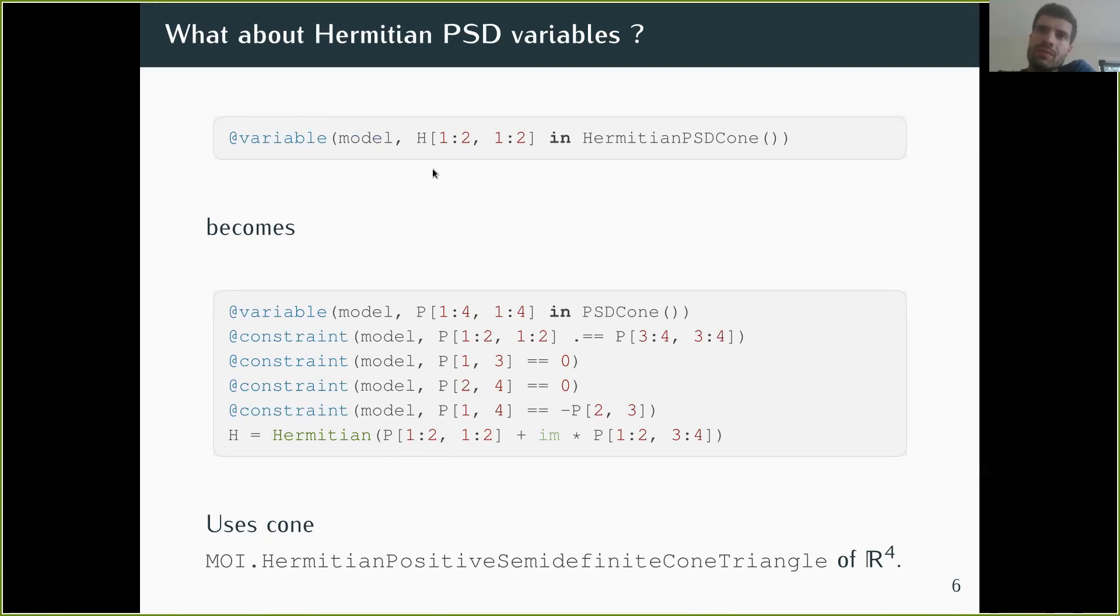The H matrix that the user created would be this. We could do the reformulation directly in Jump, but the disadvantage is that if the solver actually supports the Hermitian PSD cone, it would still receive a big PSD constraint four-by-four. By creating a set at the solver interface, we allow solvers that support this set to directly receive a constraint with four variables in this cone, and the reformulation is done only if necessary.